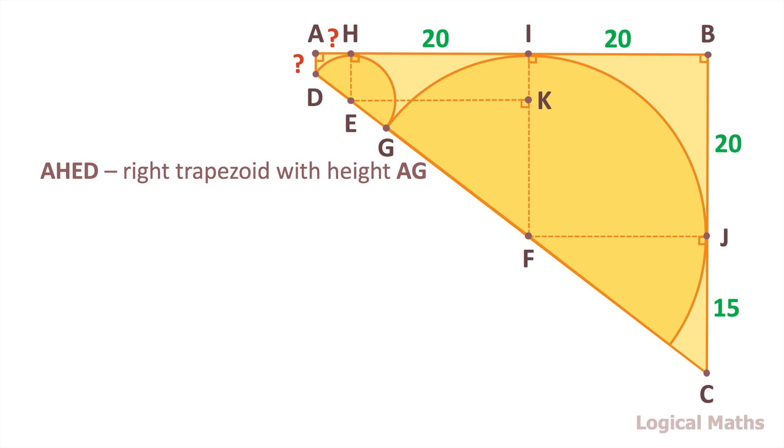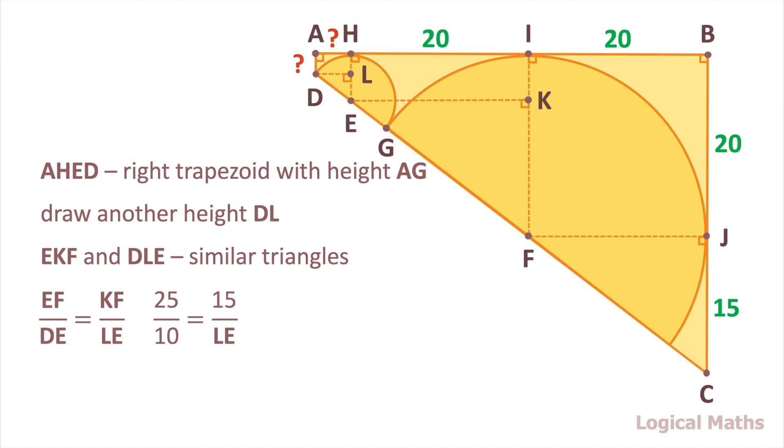AHDE is a right trapezoid with height AG. Draw another height DL. In the same way, we can obtain that the triangles EKF and DLE are similar. So we can make a proportion and find the length of LE.